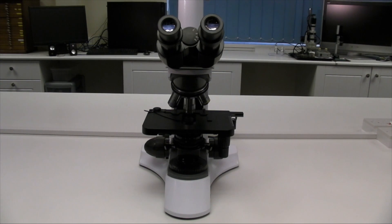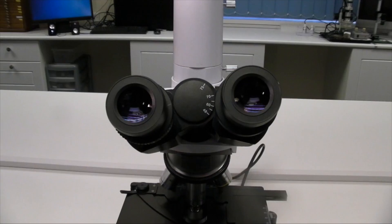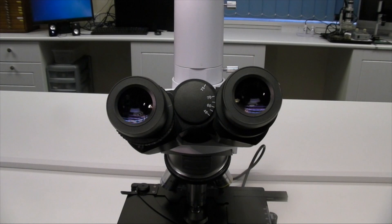Binocular microscope heads have two adjustments: the distance between the eye tubes called the interocular distance, and the separate focus of one of the eye tubes called the dioptric adjustment. There is a scale between the eye tubes which is used to set the correct distance.